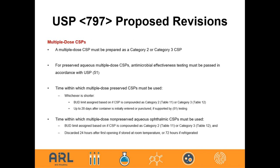For multi-dose CSPs, a multi-dose product must be prepared under category two requirements. It is critical that for preserved aqueous multi-dose products, antimicrobial effectiveness testing per USP 51 must be conducted. The purpose is to measure whether the preservative remains effective throughout the life of the product as it is being administered. Tables 11 and 12 in the proposed 797 list category two and three requirements respectively.